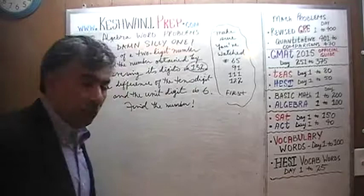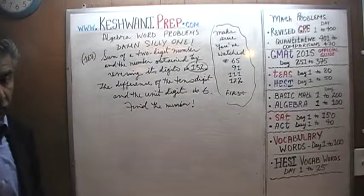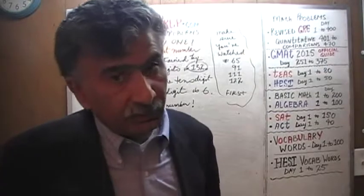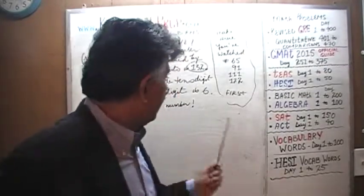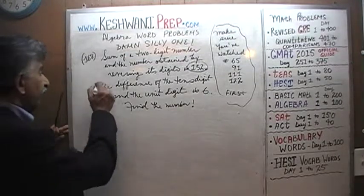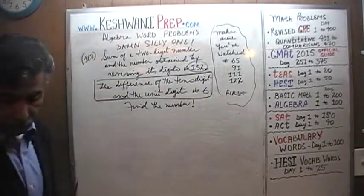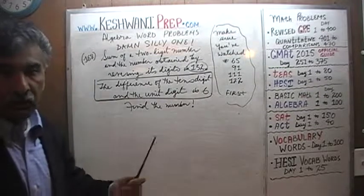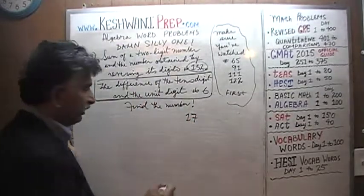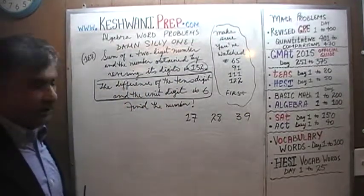Then it occurred to me afterwards that this would be a damn silly thing to ask. Do you know why? Can you tell why this would be a silly question? This is no longer an algebra question — it becomes a very simple, straightforward question. What I'm thinking is that most people will not bother with the algebraic work. They will concentrate on the second part first: we are told the difference of the two digits is 6. So why not start with the simplest scenarios: 1 and 7, then 2 and 8, then 3 and 9. Those are the only three possible scenarios.